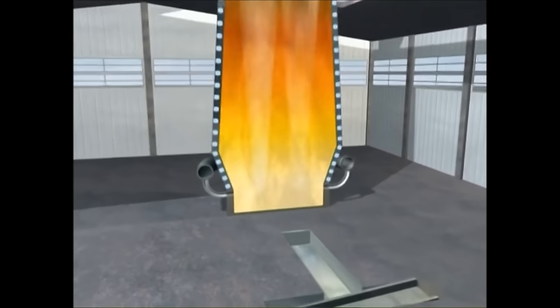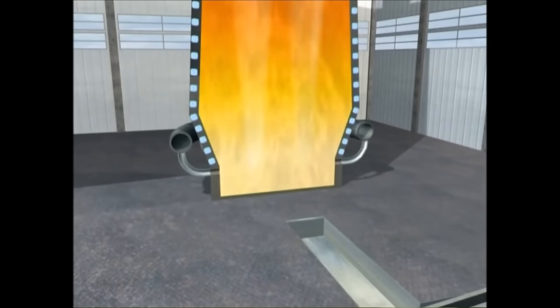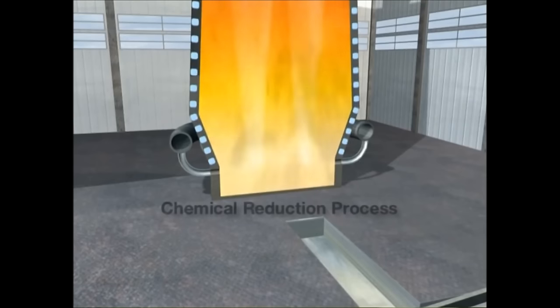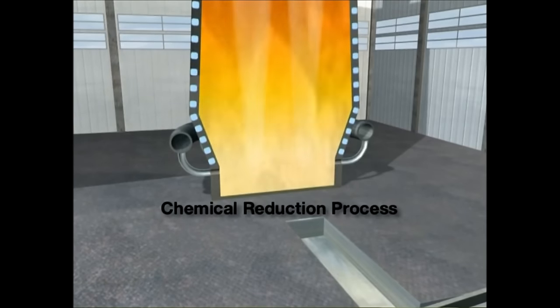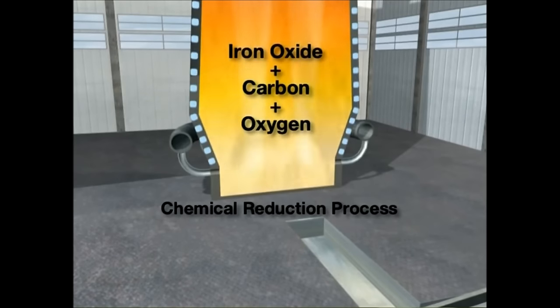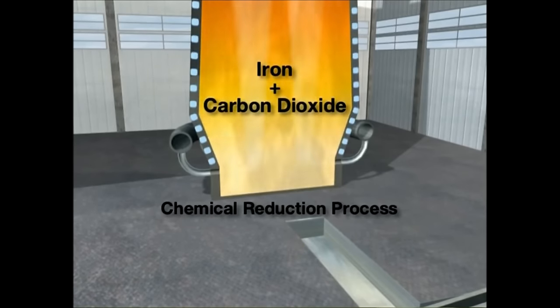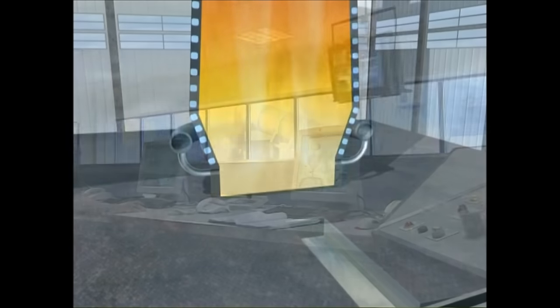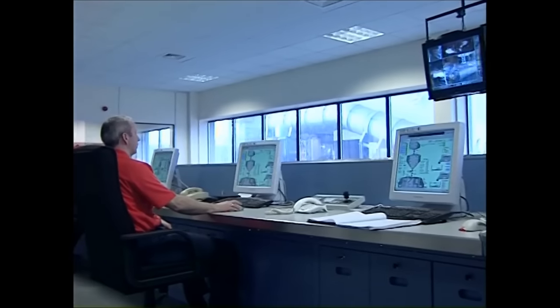This blast raises the temperature in the furnace to white-hot intensity, around 2200 degrees centigrade. This very high temperature is needed for the chemical reduction and melting of the sinter and iron ore, to form a pool of molten iron in the lower part of the furnace, just above the hearth. The limestone combines with the impurities to form a liquid which floats on top of the molten iron. This is known as slag.